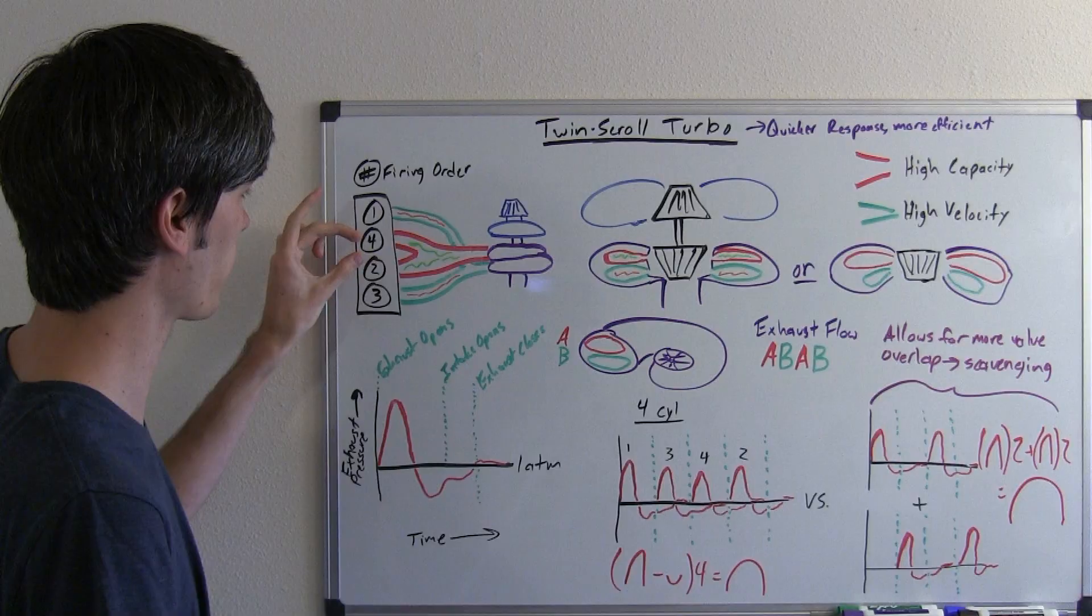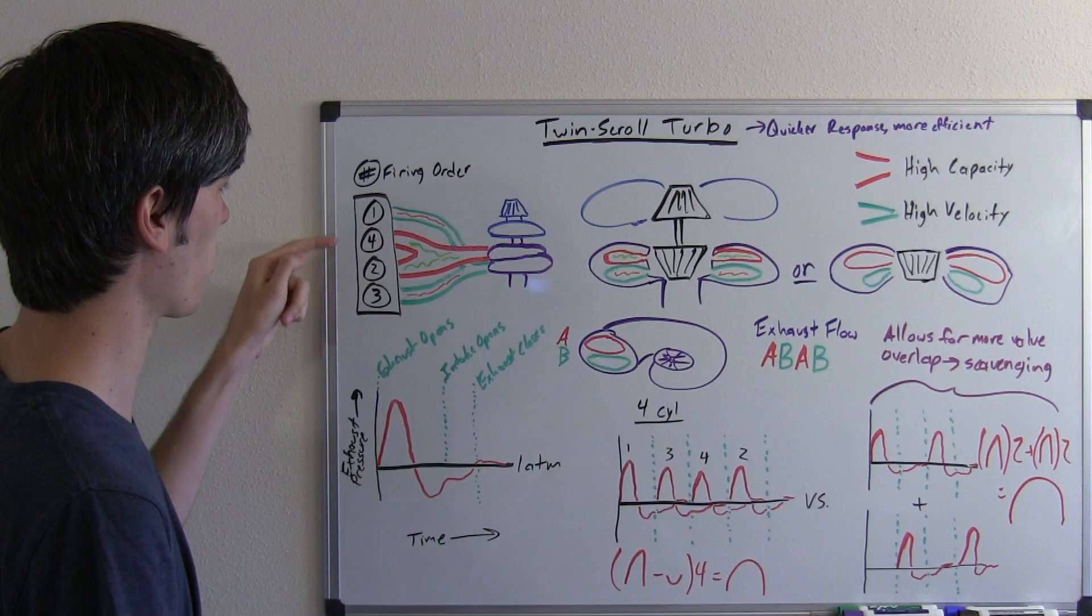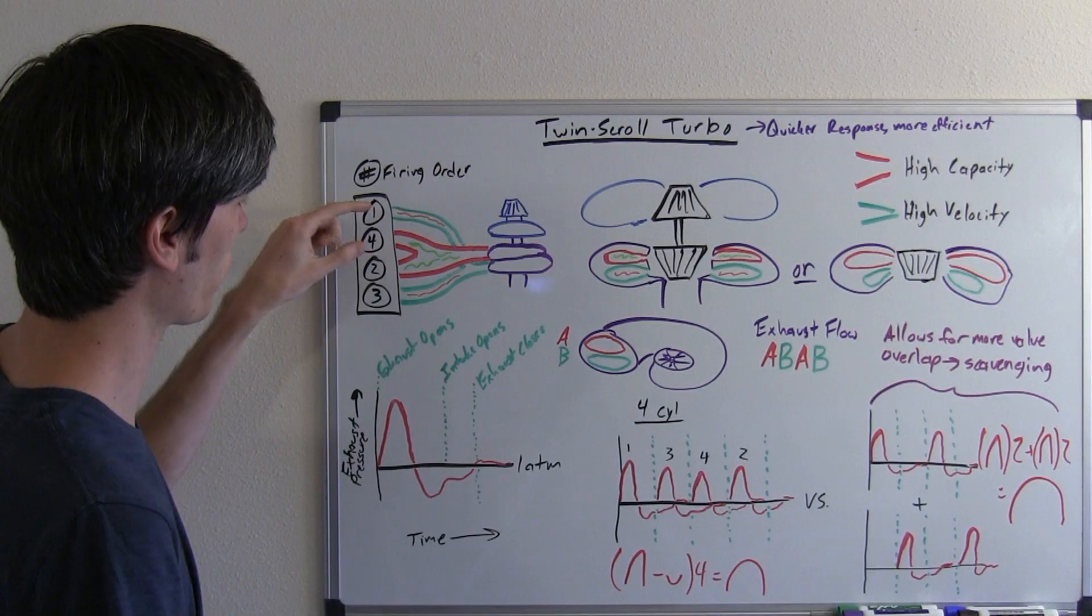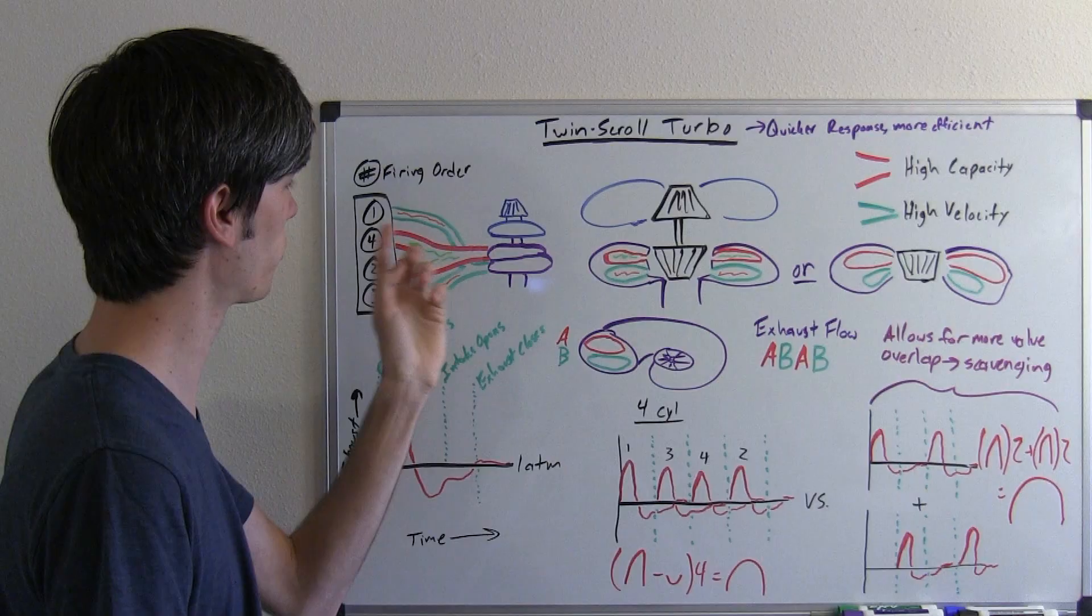So your firing order goes 1, 3, 4, 2. So what this does is, I've drawn in here so you can see 1, 2, 3, 4, and so what that does is it alternates which exhaust manifold here is getting the exhaust going through it.